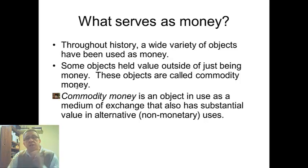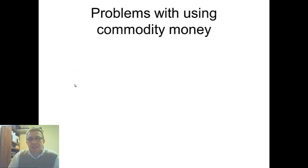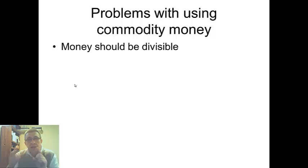Commodity money is an object that has substantial value in alternative uses. If you don't want to use it as money, it still has value. Cattle used to be used as money, which I find fascinating. It's an object that has outside value, and people trusted it, so people would trade cows for other products. Cows didn't necessarily make the greatest source of commodity money though.